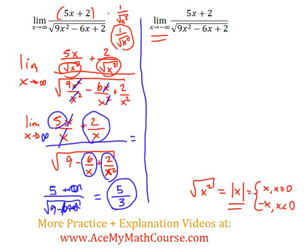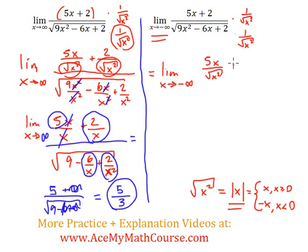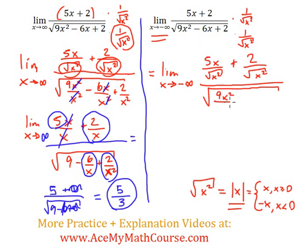Now how about the second one — are we going to get the same thing for the limit as x approaches negative infinity? We'll see. We're going to do the same thing: multiply the top and the bottom by 1 over the square root of x squared. We get 5x over the square root of x squared plus 2 over the square root of x squared, all over the square root of 9x² over x² minus 6x over x² plus 2 over x².